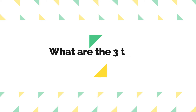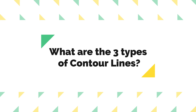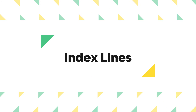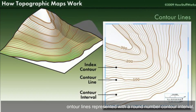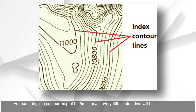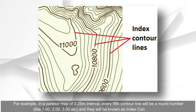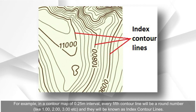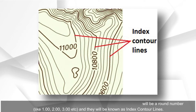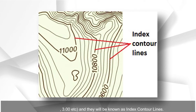There are three types of contour lines. Index lines are the prominent contour lines represented with a round number contour interval. For example, in a contour map of 0.25 meter intervals, every fifth contour line will be a round number like 1.00, 2.00, 3.00, etc., and these are known as index contour lines.